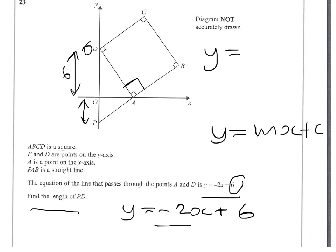The gradient of DA is minus 2, so 1 over minus 2 with a sign change - the gradient of the perpendicular line PB will be a half.